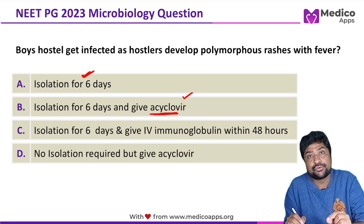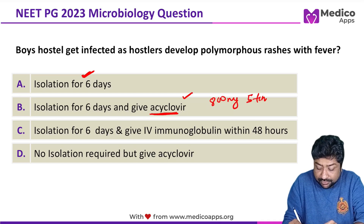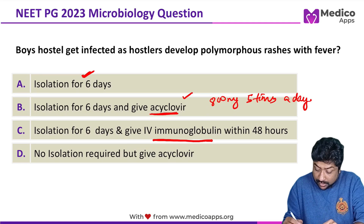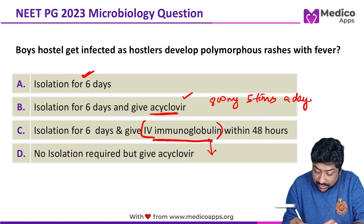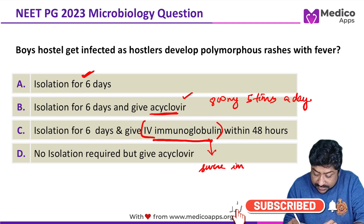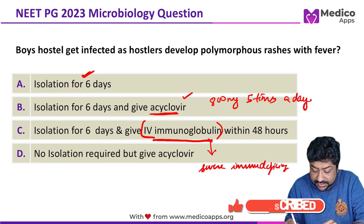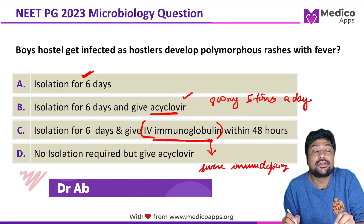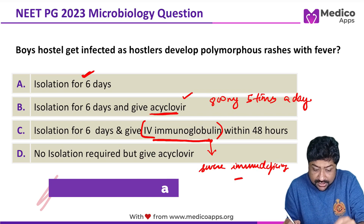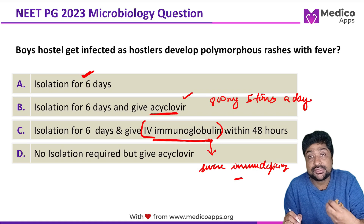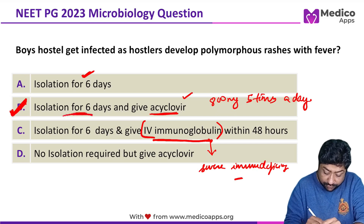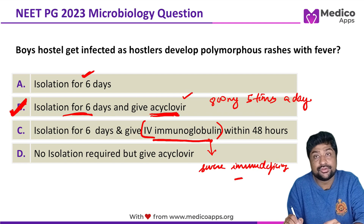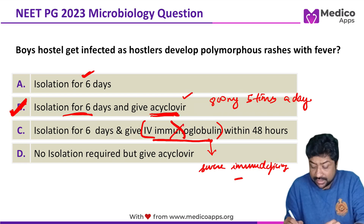As part of standard treatment, we give acyclovir within the first 24 hours of appearance of the rash. The usual dose is 800 mg five times a day. Immunoglobulin is not generally used in a healthy individual — it is only given when there is severe immunodeficiency. So immunoglobulin is not part of standard treatment guidelines. This makes the answer option B: isolation for six days and give acyclovir immediately within the first 24 hours.